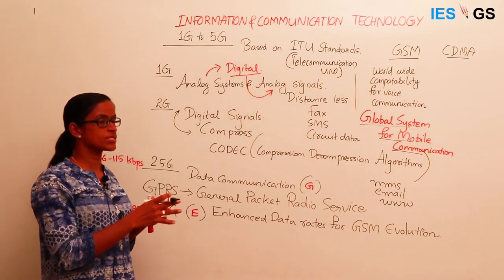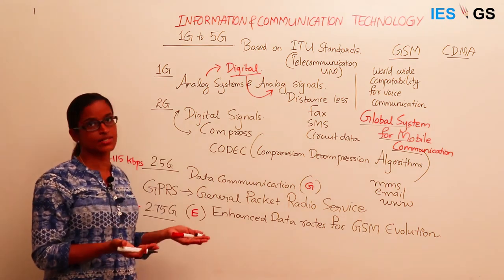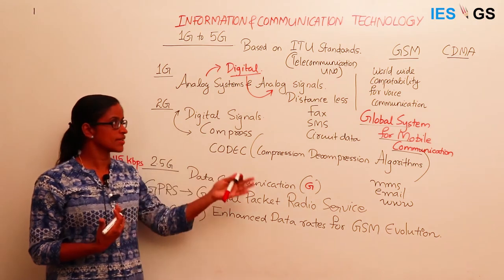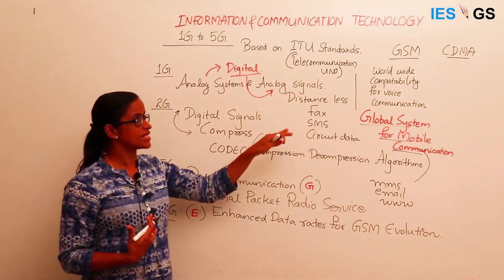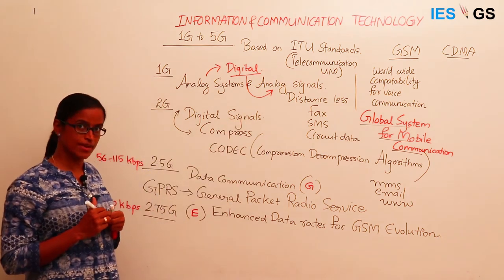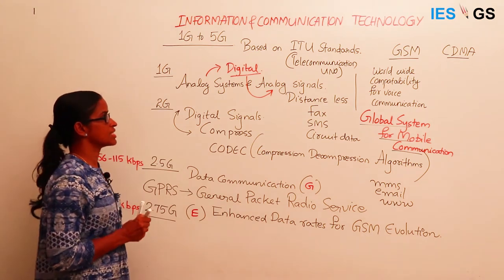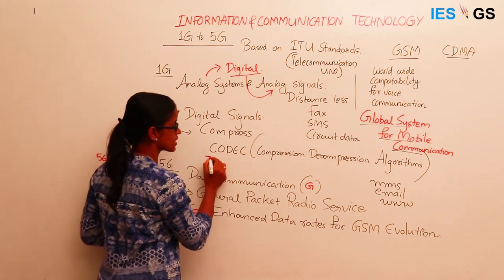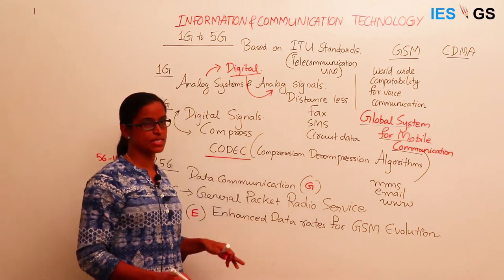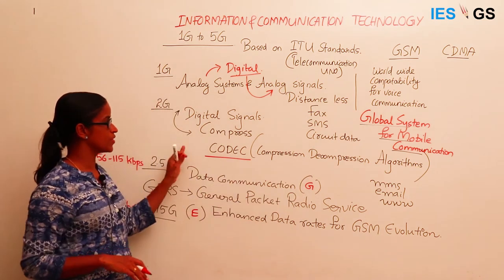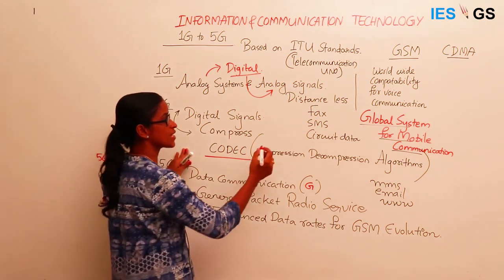GSM aims for worldwide compatibility for communication — that is, a person using a GSM phone will be able to communicate in any region on Earth, as long as the service provider adheres to certain standards. Compression is done using algorithms called codecs — which stands for compression-decompression. Using these algorithms we are able to compress data, and GSM supported only circuit data.